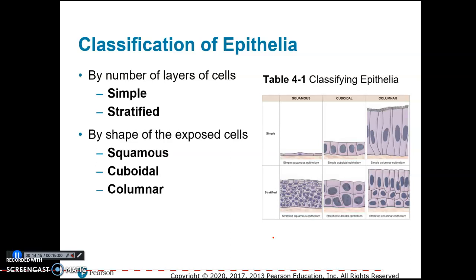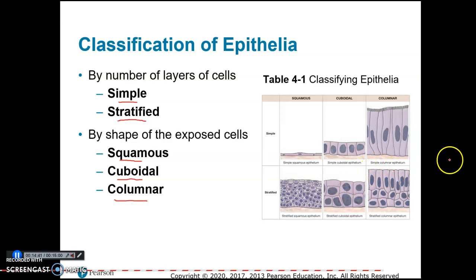Epithelial tissue is classified based on the number of layers of cells: if there's only one layer, it is simple; if there is more than one layer, it's called stratified. The shape of the cells can be squamous (flat), cuboidal (like a cube or box), or columnar (very tall cells). So you would say, for example, simple squamous, simple cuboidal, simple columnar, or stratified squamous, stratified cuboidal, stratified columnar.